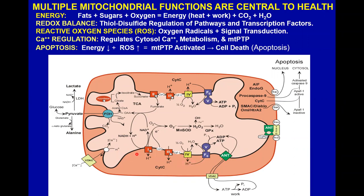ATP is exchanged across the inner membrane by adenine nucleotide translocators and passes through a sieve-like voltage-dependent anion channel (porin) in the outer membrane, where it can be used to do work — move your muscles, transport ions across neurons, or anything else you want to do. We call this coupling oxidation with phosphorylation: oxidative phosphorylation. Different people have different efficiencies of pumping protons and converting them into ATP.